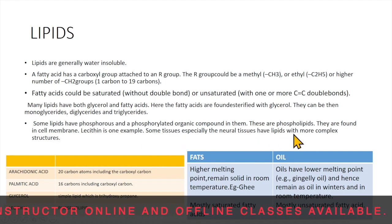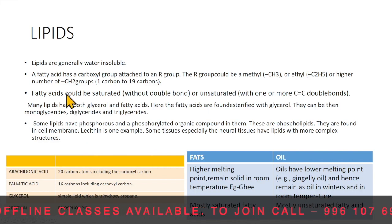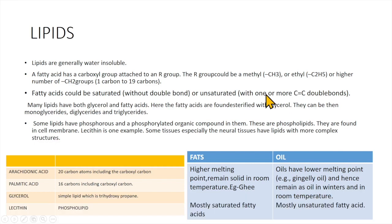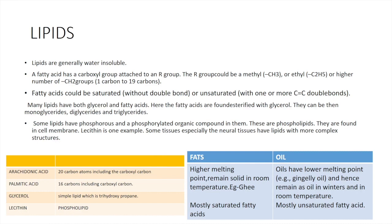Nervous tissues have lipids with more complex structures. Another classification of lipids is saturated and unsaturated. If they are saturated, they do not contain double or triple bonds. If they are unsaturated, they contain one or more double or triple bonds. Many lipids have both glycerol and fatty acids, where the fatty acids are esterified with glycerol via an ester bond. They can be monoglyceride, diglyceride, or triglyceride based on the number of fatty acid molecules attached to glycerol.